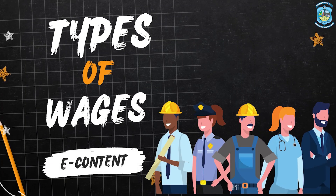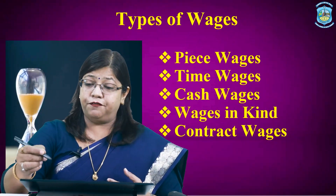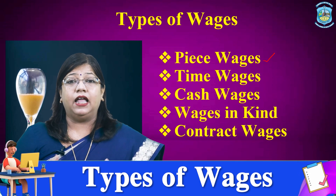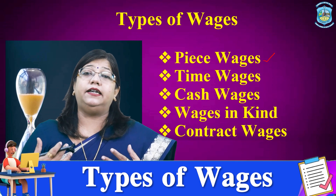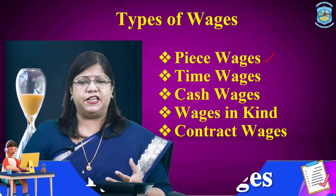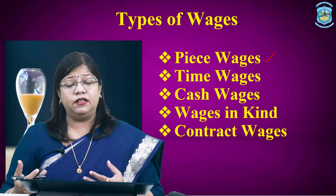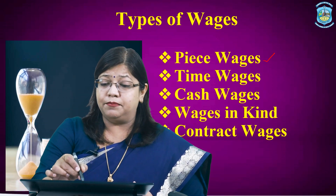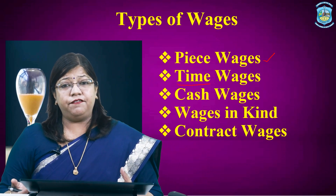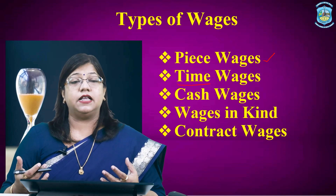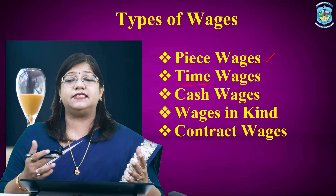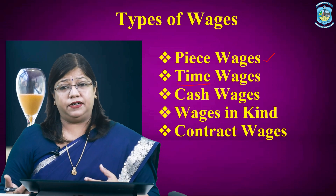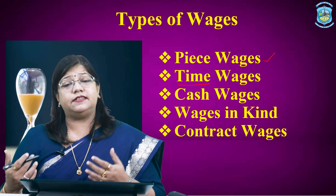Let us talk about the different types of wages. The first type is piece wages. Piece wages are the wages paid according to the work done by the worker. To calculate the piece wage, the number of units produced by the worker are taken into consideration. Equally important is time wages. If the labourer is paid for his services according to time, it is called time wages. For example, if a labourer is paid rupees 200 per day, it will be termed as his time wages.